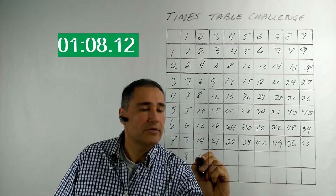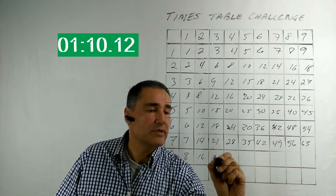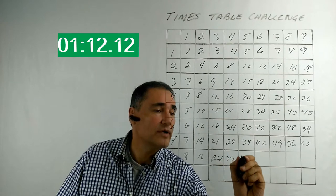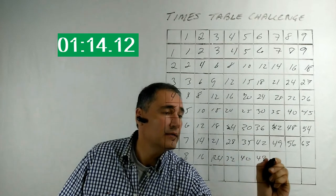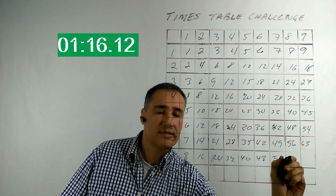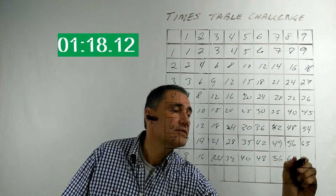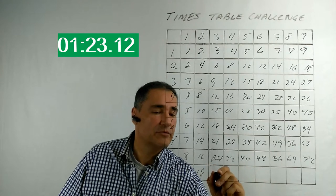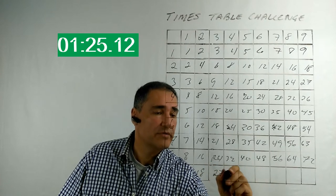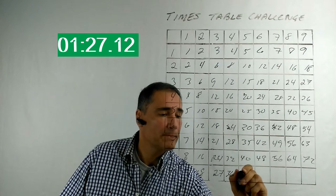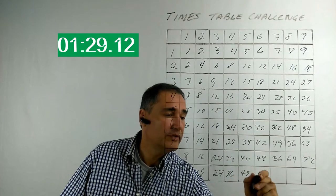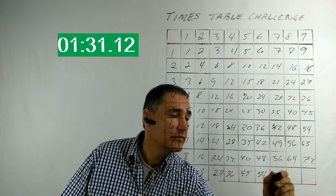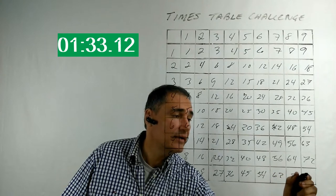Moving to the eights: 8, 16, and he notes 8 times 3 is 24, then 32, 40, 48, 56. He calls out 8 times 8 is 64 and 9 times 8 is 72. Finally, the nines: 9, 18, he specifies 9 times 3 is 27, then 36, 45, 54, 63, 72, and 81.